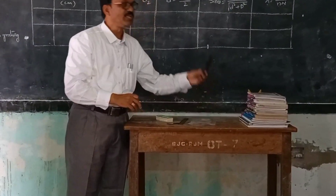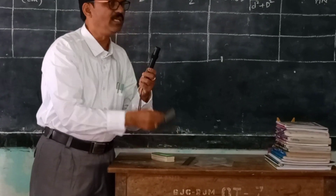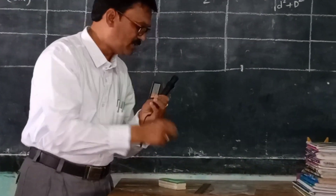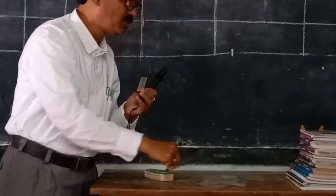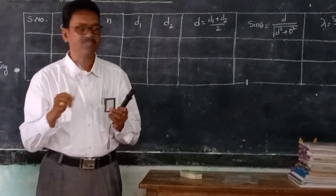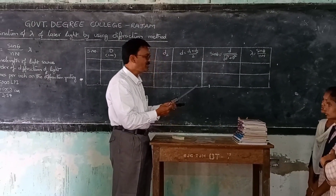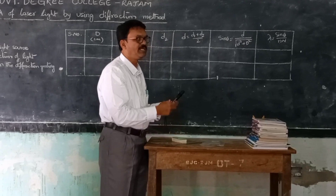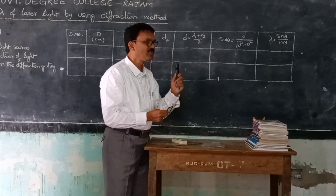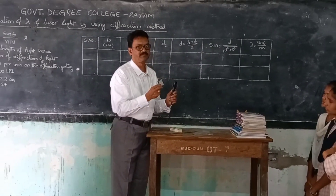The apparatus required are: a laser source, a diffraction grating, and a scale to measure the length. By using these three, we have to determine the wavelength of the light using the grating.